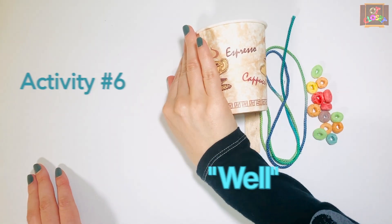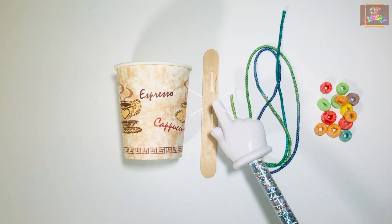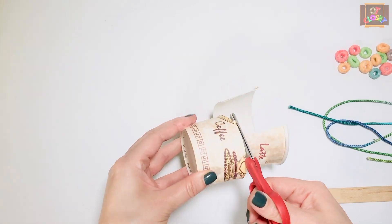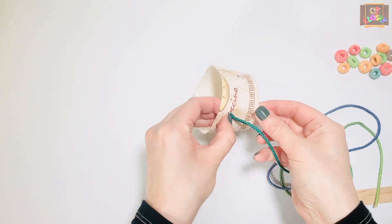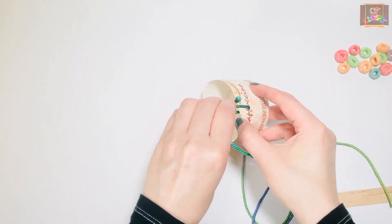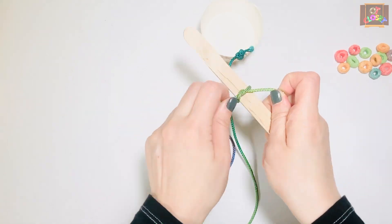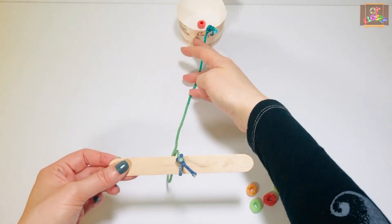For activity number six, you need some cereal or M&Ms, a string, a popsicle stick, and a cup. Tie one end to the cup and one end to the stick. To make this activity more difficult, use a longer lace so you can put the cup further away.